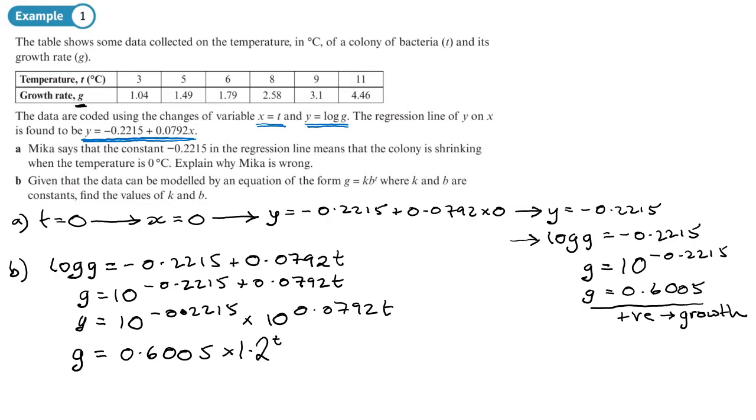We've now got the values of the constants. So k is the number at the front: k is 0.6005, and b is 1.2, there or thereabouts.